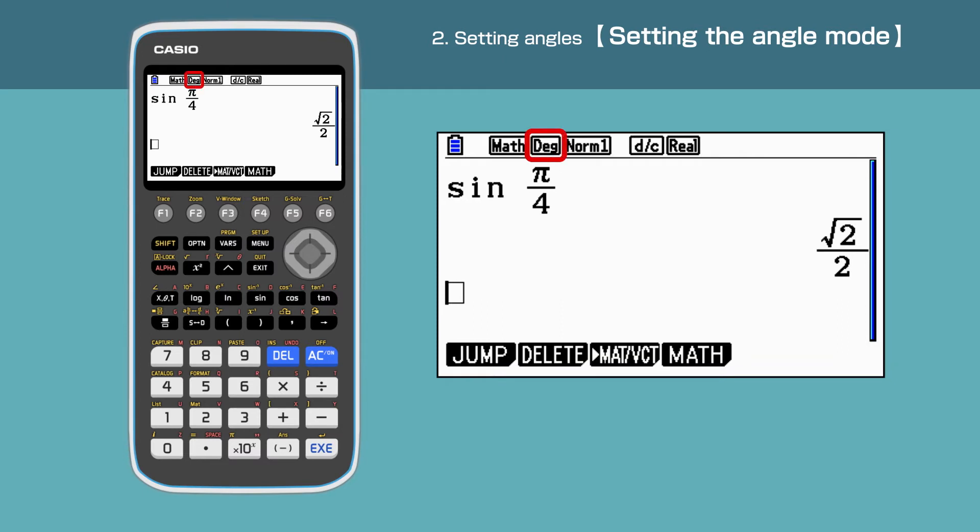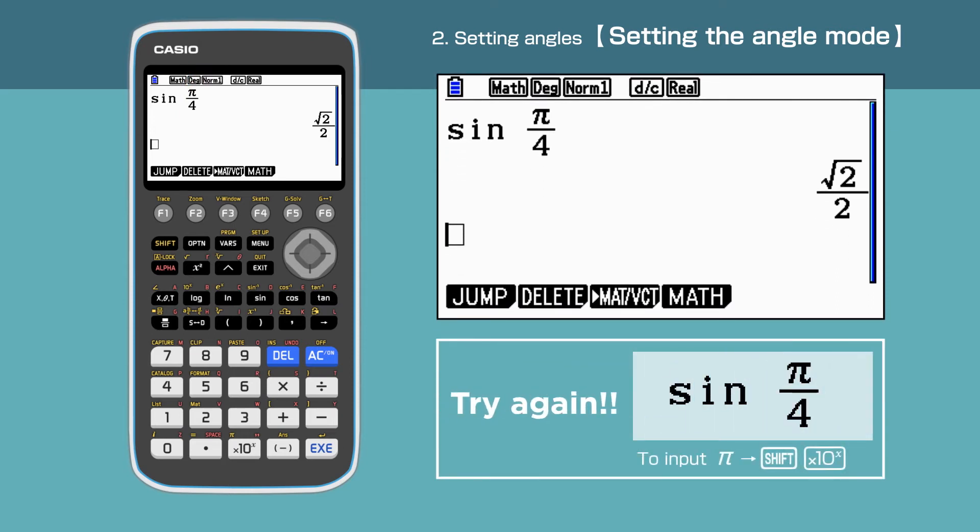Confirm that the angle mode is set to degrees at the top of the screen. Let's put the same expression, sine pi over 4, in order to see if the change has been reflected.